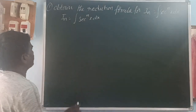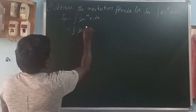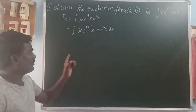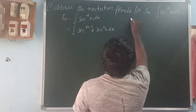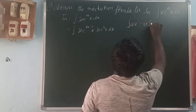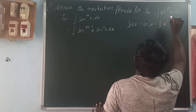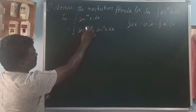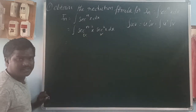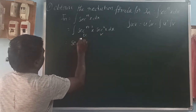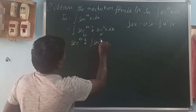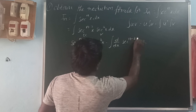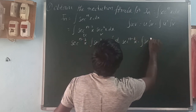So, the power n we can reduce. That is here: integration of secant power n minus 2x times secant squared x dx. So, it is in the form of integration uv. The integration uv form is: u times integration of v, minus integration of derivative of u times integration of v.